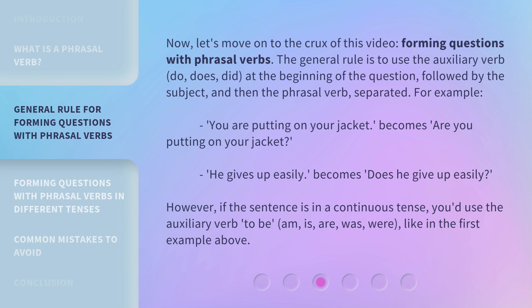However, if the sentence is in a continuous tense, you'd use the auxiliary verb 'to be' — am, is, are, was, or were — like in the first example above.